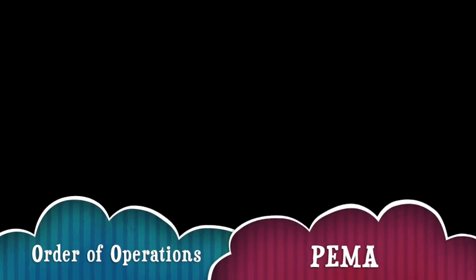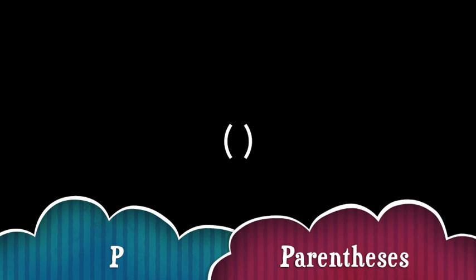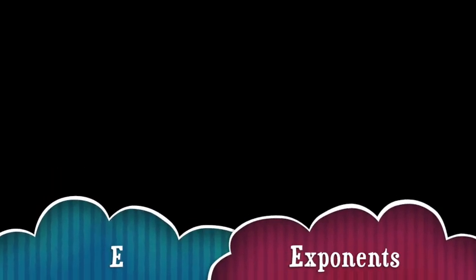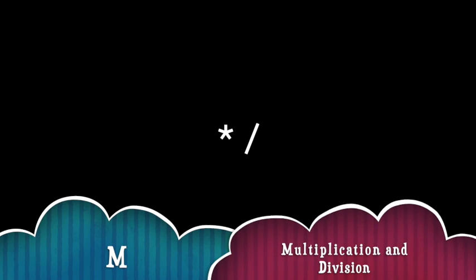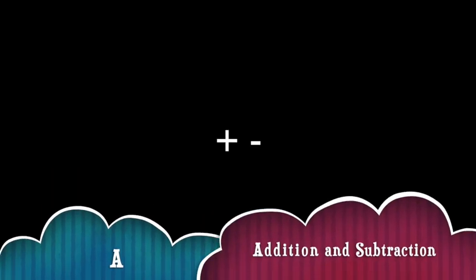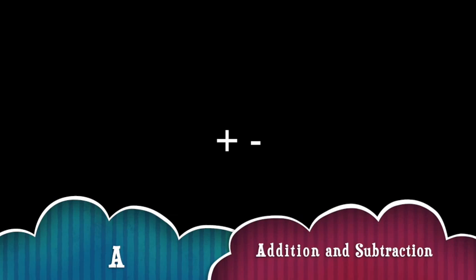Personally, I prefer the acronym PEMA, where P still represents parentheses, E still represents exponents, M now represents both multiplication and division, and A represents both addition and subtraction.